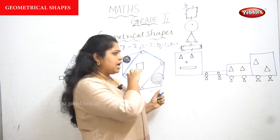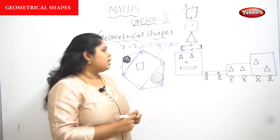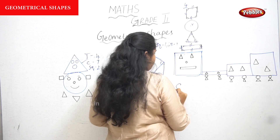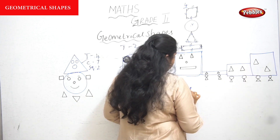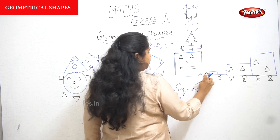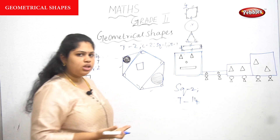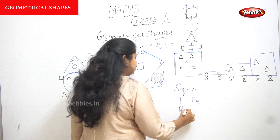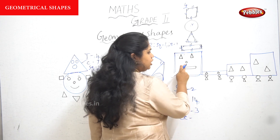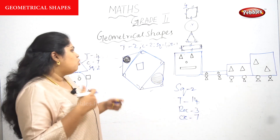Let's move on to the third picture. You can see lots of squares, rectangles, circles, and triangles put together to make a picture. How many squares? One, two — there are two squares. How many triangles? One, two, three, four, five, six, seven, eight, nine, ten, eleven, twelve, thirteen, fourteen — so there are fourteen triangles. How many rectangles? One, two, three — three rectangles.